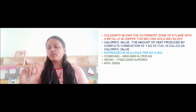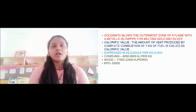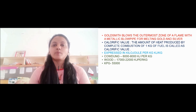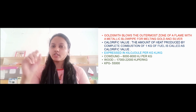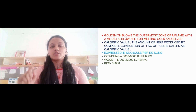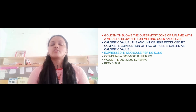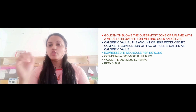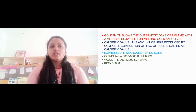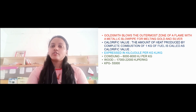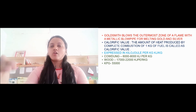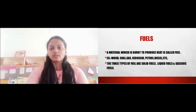Different substances have different calorific values. The first is cowdung, whose calorific value is 6,000 to 8,000 kJ per kg. Next is wood, whose calorific value is between 17,000 to 22,000 kJ per kg. Next is LPG, whose calorific value is 55,000 kJ per kg — the highest calorific value. These are the calorific values of different substances.